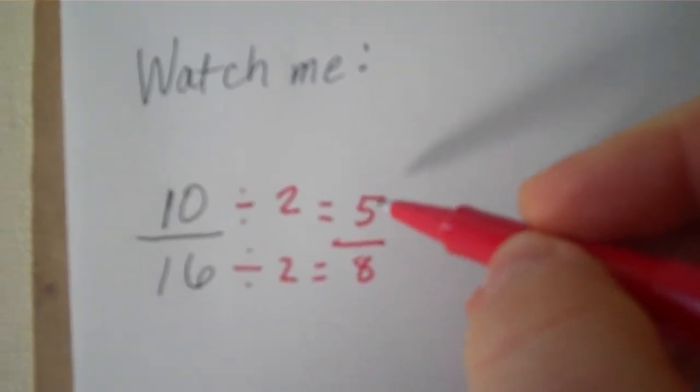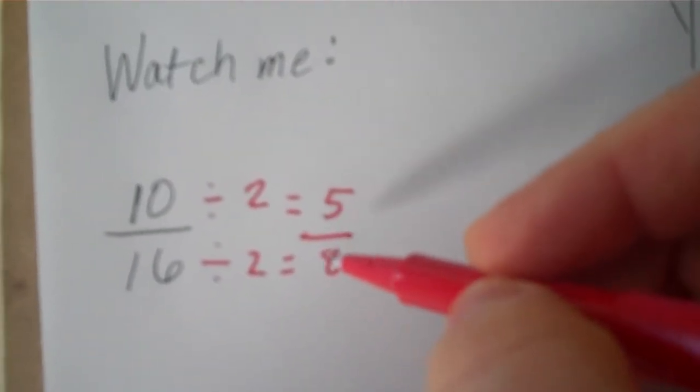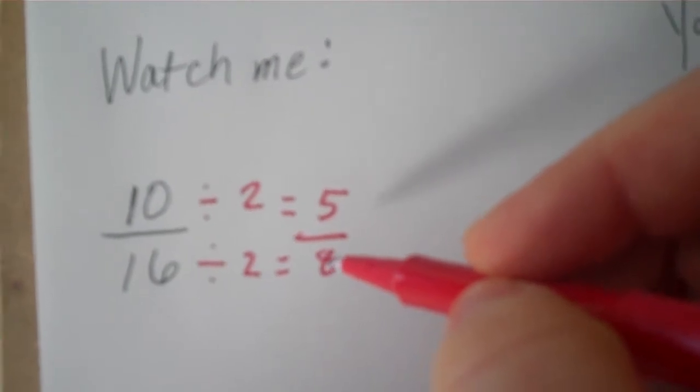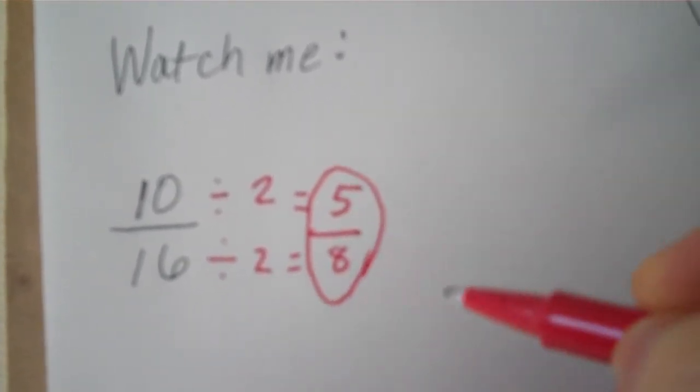Am I done yet? Well, I know the only factors of 5 are 1 and 5, and neither of those, well, besides 1, 5 is not a factor of 8. So, that is simplified. Done.